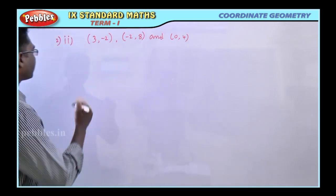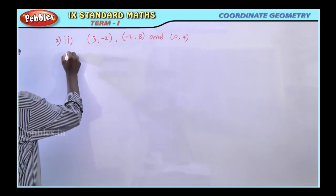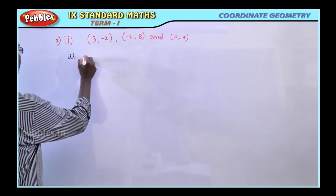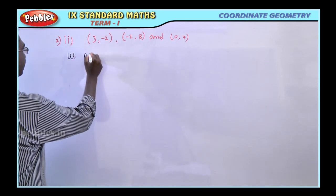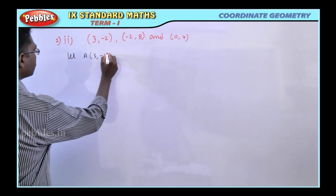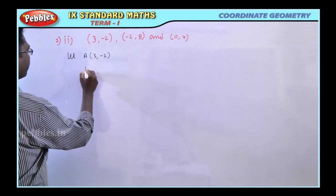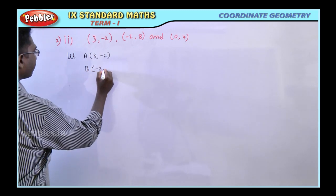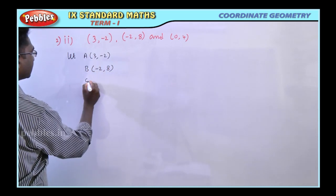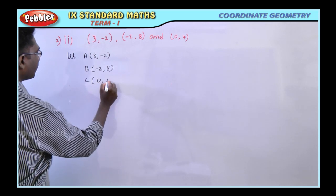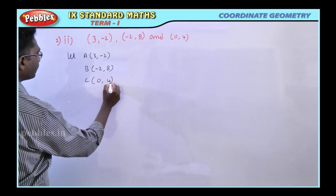First point, let A = (3, -2). Second point, B = (-2, -8). Third point is C = (0, -4).